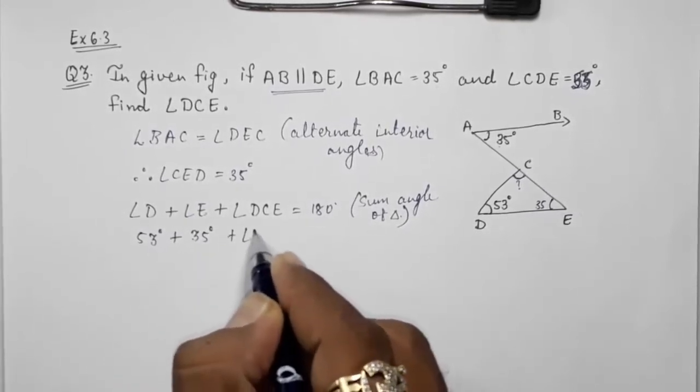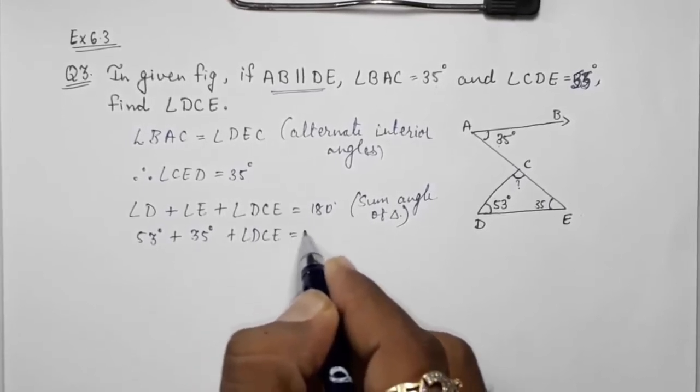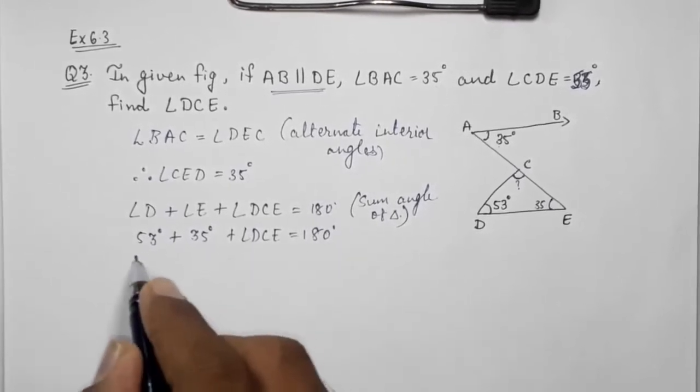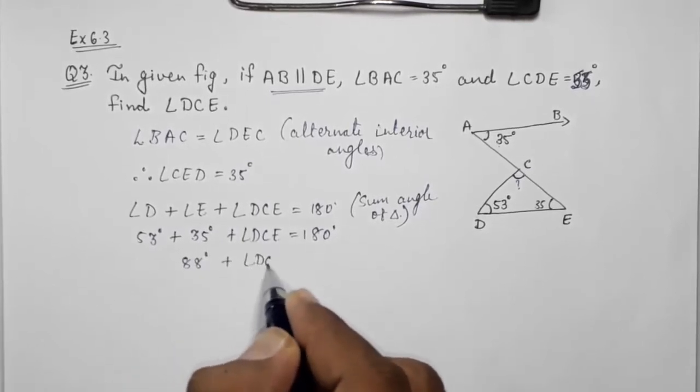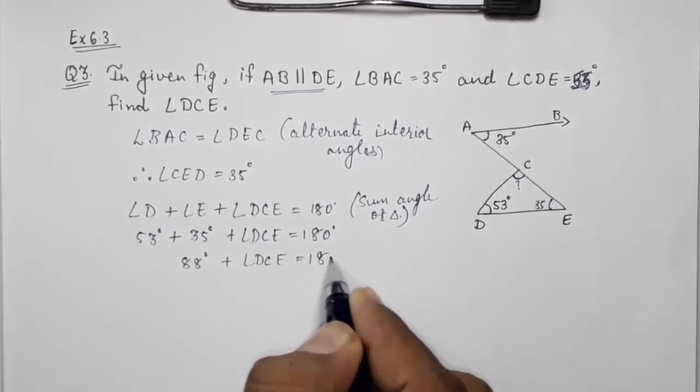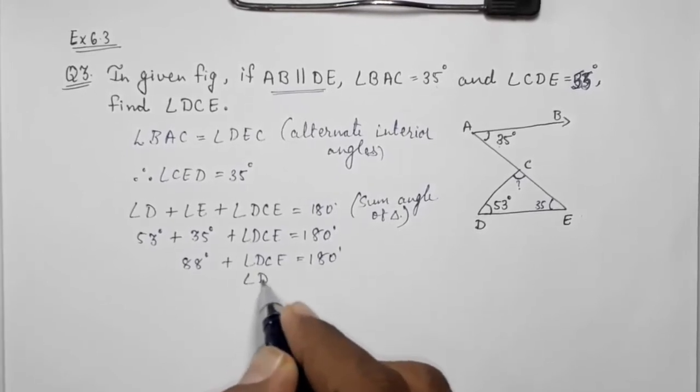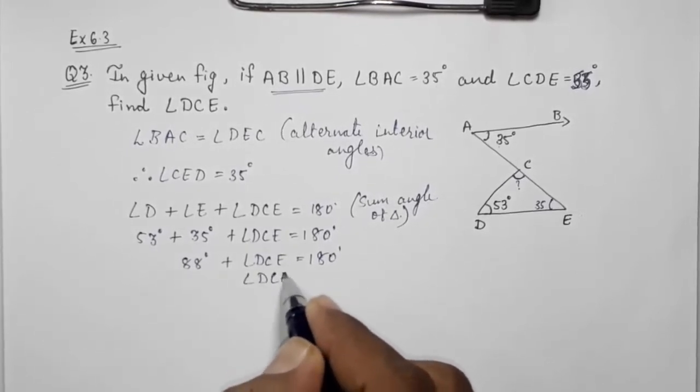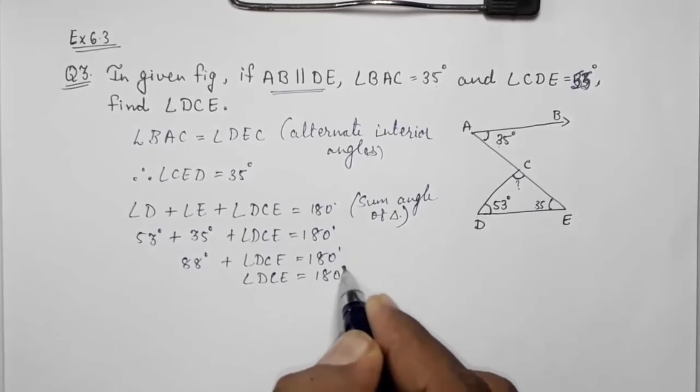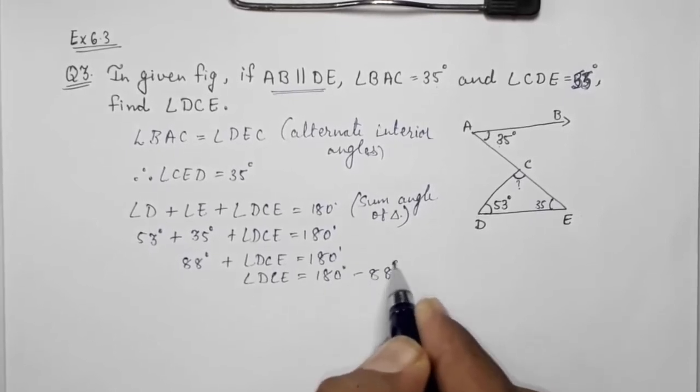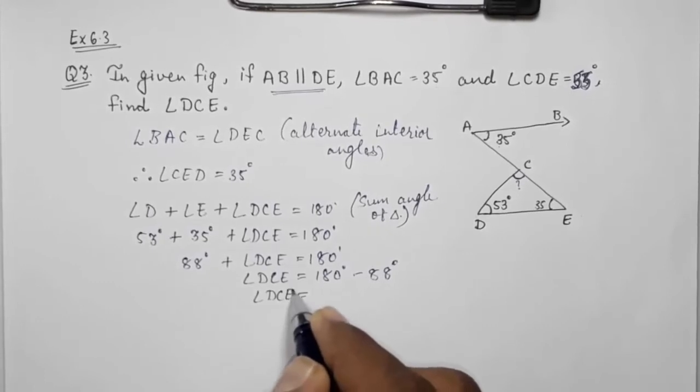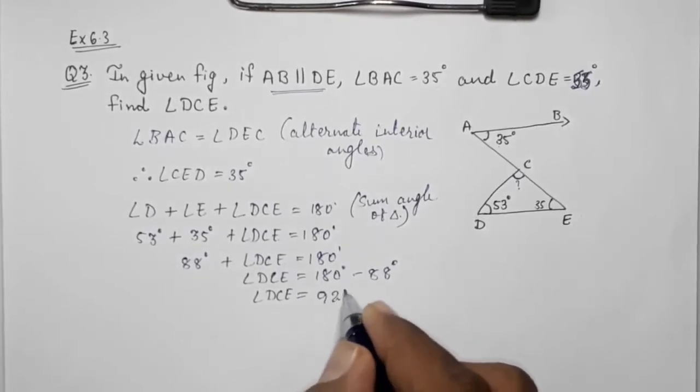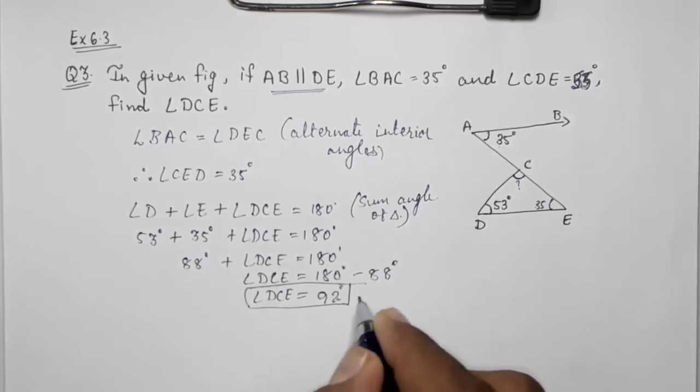This will be 88 degrees plus angle DCE equals 180 degrees. Angle DCE is equal to 180 minus 88, so angle DCE will become 92 degrees.